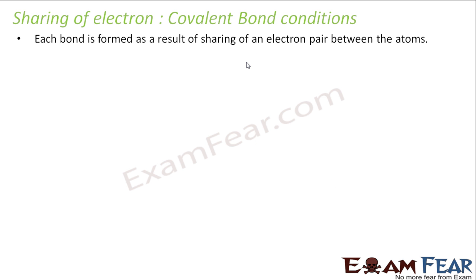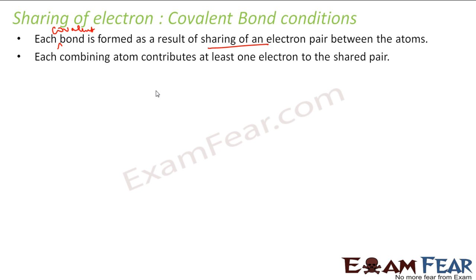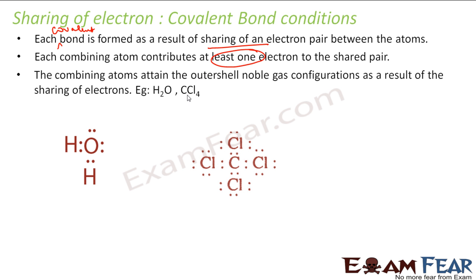There are some rules for covalent bond formation. Each covalent bond is formed as a result of sharing of an electron pair, and each atom should contribute at least one electron to the shared pair. All sharing happens just to attain the noble gas configuration — atoms have more energy and want to release it to become stable, just like everybody wants to be stable in life.